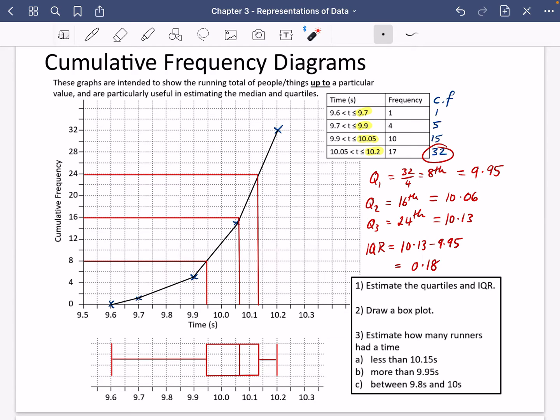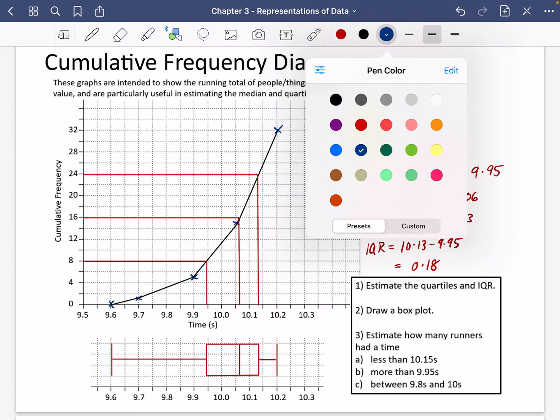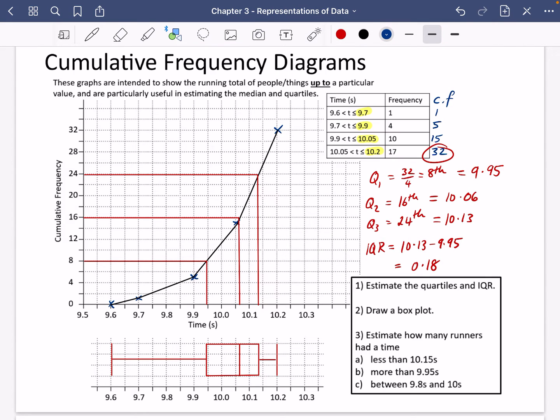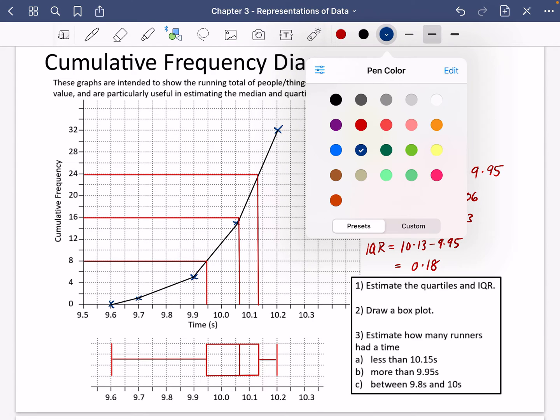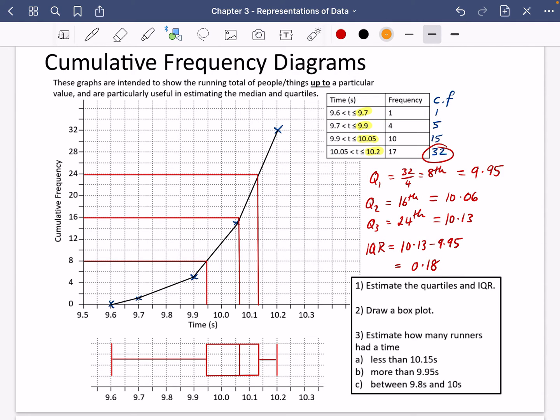Let's have a look at question three. It says, estimate how many runners had a time less than 10.15 seconds. So this time, I'll use a slightly different color here. We're going to see how we can interpret the cumulative frequency diagram. So let's have a look at 10.15 seconds on the bottom part, which is going to be just about here.